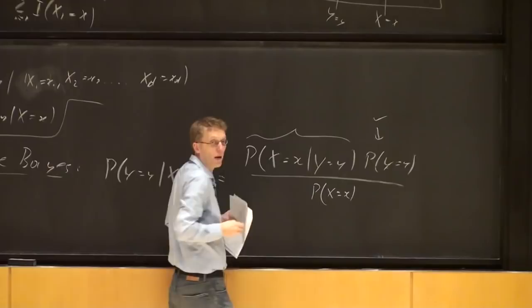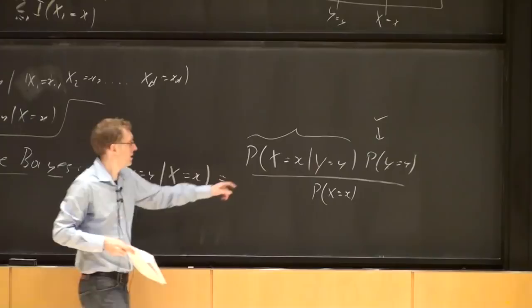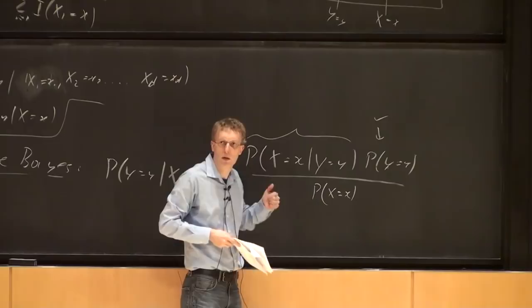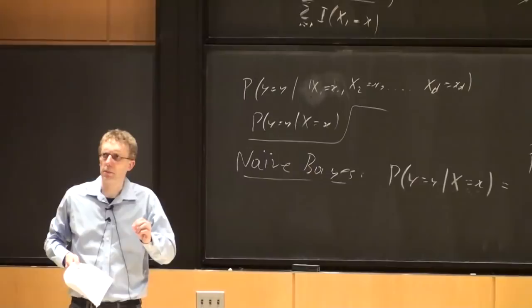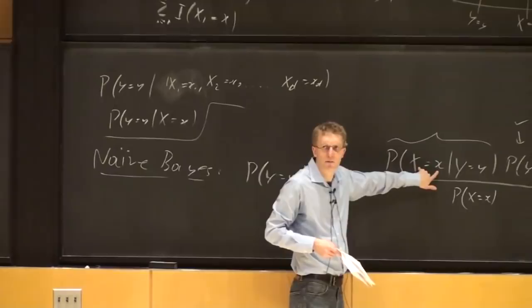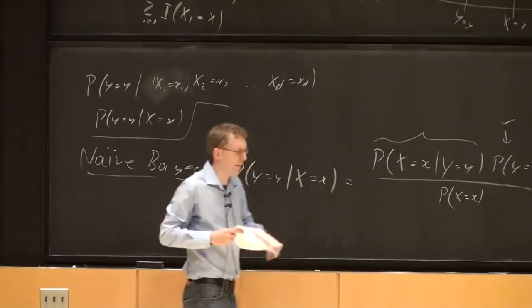Given the label, what's the probability we get exactly that email? It's really hard to estimate — we've never seen that one. Naive Bayes makes a crucial assumption: the features are conditionally independent given the label. The name reveals it's naive.